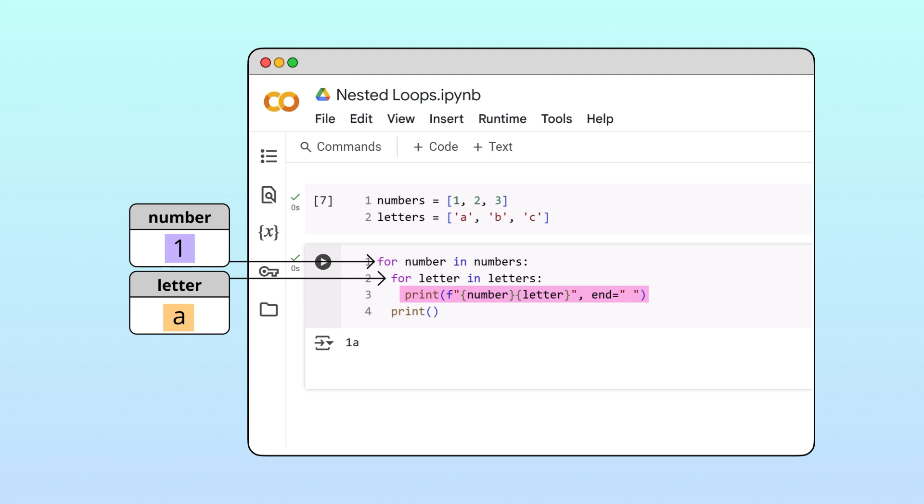Since this is the last line of the inner loop, Python returns to the header of the inner loop. That's important! Python will execute all iterations of the inner loop before continuing with the rest of the outer loop's body.